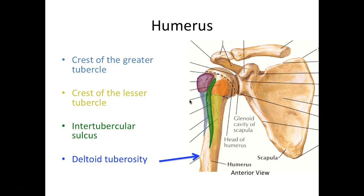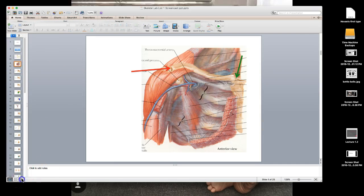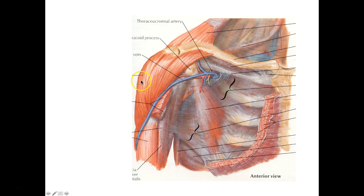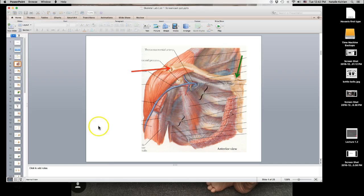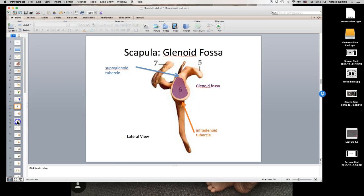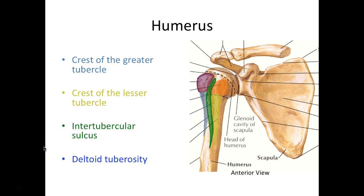The last part here is the deltoid tuberosity. Tuberosity looks similar to tubercle but is a different type of bump — more of a roughened, perforated, rocky type of bump; I'll show the difference in lab. It's called the deltoid tuberosity because the deltoid muscle moves down and inserts into that part of the humerus, right at the deltoid tuberosity.